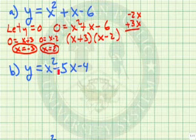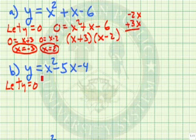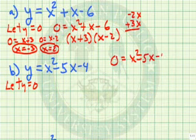Let's continue. y equals x squared minus 5x minus 4. Once again, let's let y equal zero. So we now have the equation zero equals x squared minus 5x minus 4.